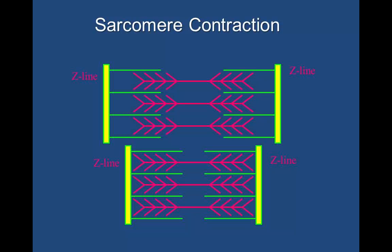Here we have an illustration of a sarcomere shortening. You can see the Z lines come closer together as the actin and myosin overlap and form those cross bridges.